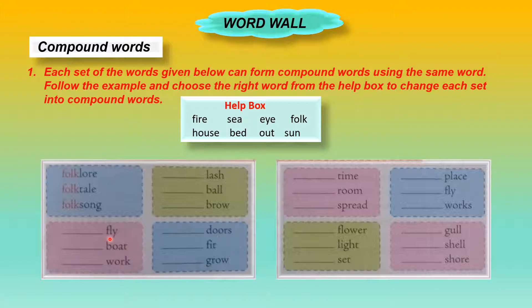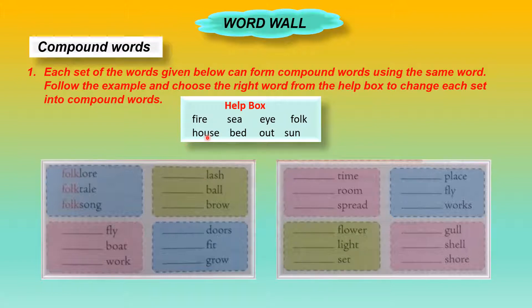Now the next set of words: fly, boat, work. From the help box, we can take the word 'house' — house fly, houseboat, housework.